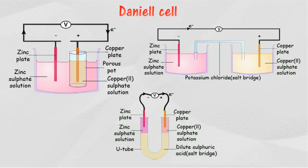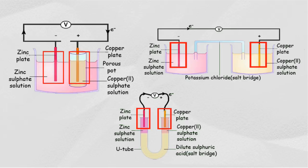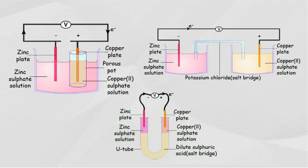Daniel cell is made of two electrodes of different types of metal immersed in two separate electrolyte solutions. The electrolyte solutions in a Daniel cell can be separated either by a porous pot or a salt bridge.